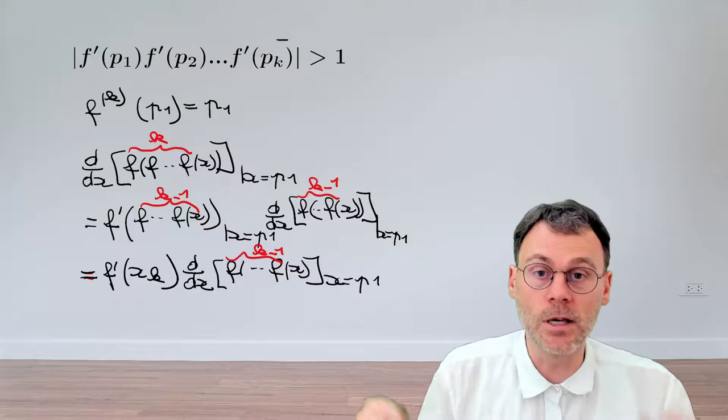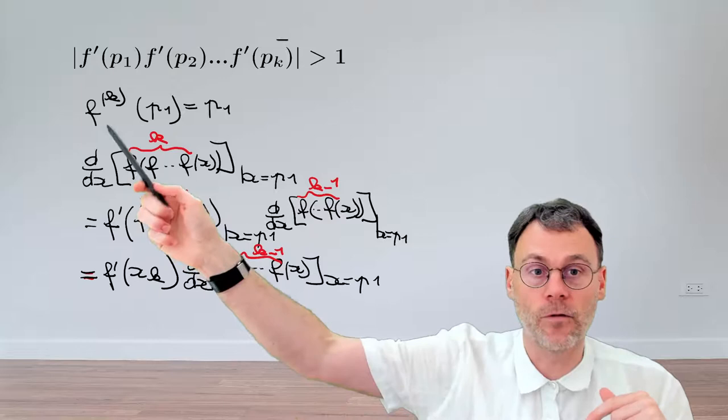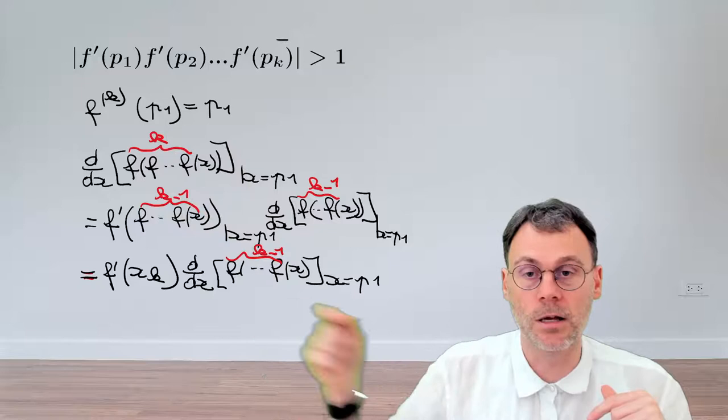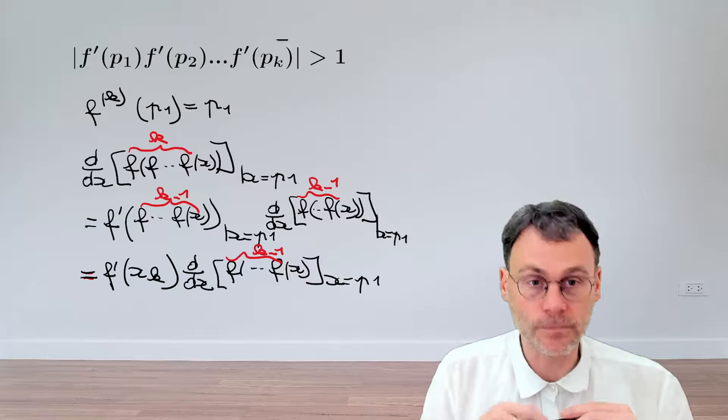So we can keep on applying this formula, the formula which basically tells us if you take the derivative of k applications of f, what do we get? We get f prime of pk, so this is the same k as the number of applications here for f, and then taking a derivative of k minus 1 applications.